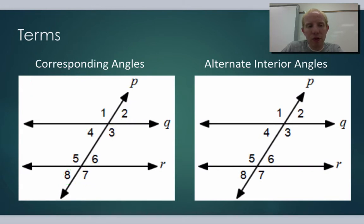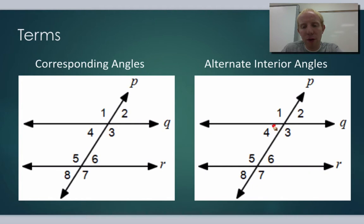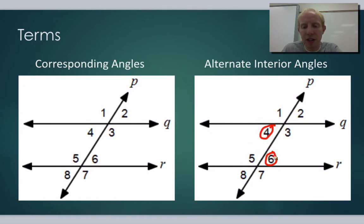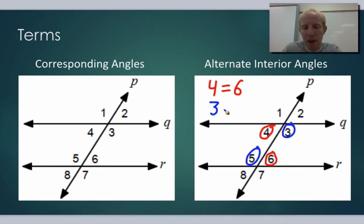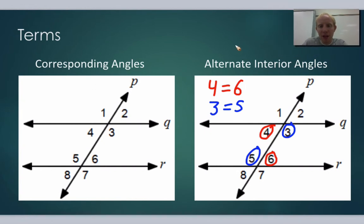Another tool is the alternate interior angles theorem, which we proved in class. It comes from corresponding angles and vertical angles. Alternate interior angles — like four and six — are on opposite sides of the transversal and inside the two parallel lines. We proved that four and six are equal to each other. Likewise, three and five are also alternate interior angles and are also equal. For this class, you can use this and label it as AIA — the alternate interior angle theorem.